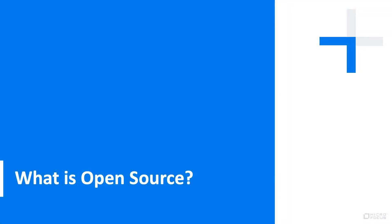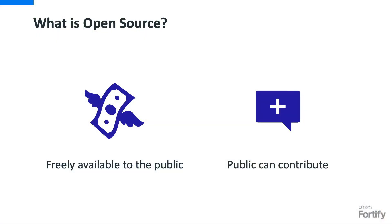In your own words, what is open source? At a high level, open source software is where the code is made freely available to the public, and contributions from the public may be accepted too. There are a lot of examples of open source software and there are some really cool stories that have emerged from that evolution over the years.